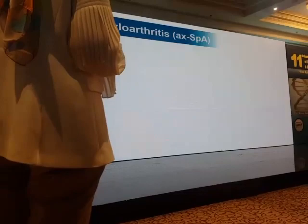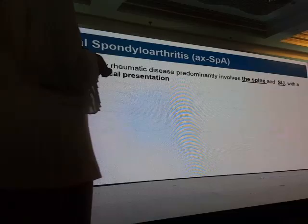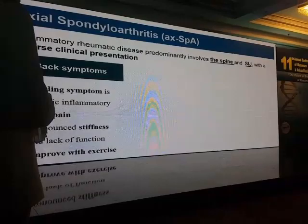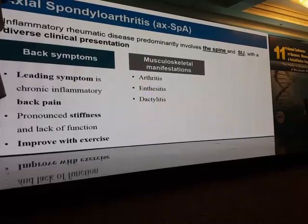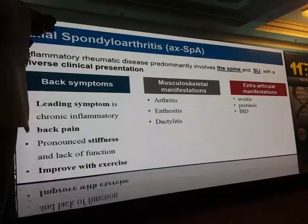MZL SpA is an inflammatory rheumatic disease that predominantly involves the spine and sacroiliac joint with diverse clinical presentation. The leading symptom is inflammatory back pain with pronounced stiffness and lack of function which improves with exercise. Arthritis, enthesitis, and extra-articular manifestations like uveitis, psoriasis, and IBD may also be present.